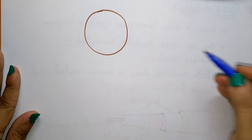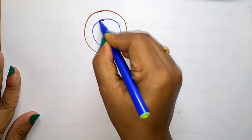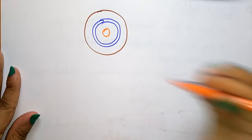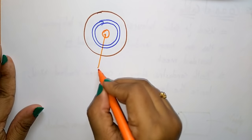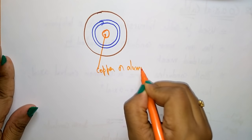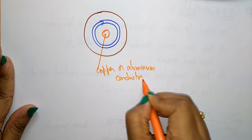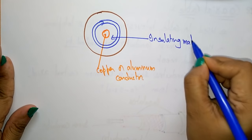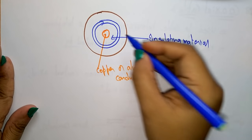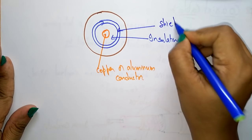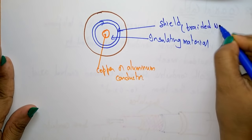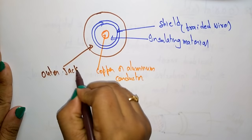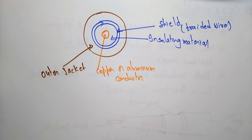This is the outer plastic cover, also called the outer jacket. Here you have the copper or aluminum conductor. Then you have the insulating material, and this is the shield — we call it the braided wire. The final last layer is the outer jacket. This is how the coaxial cable looks.